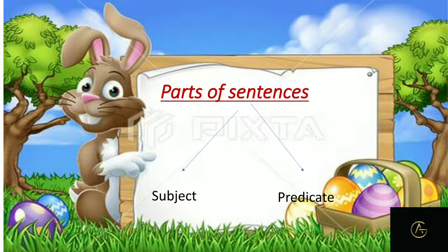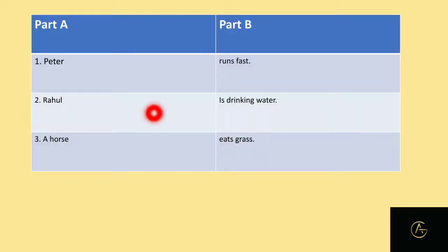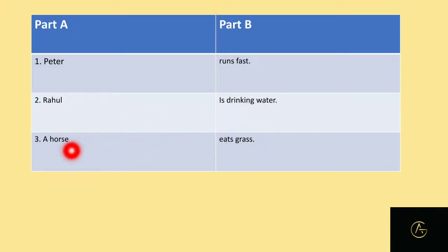Next, let's study the parts of a sentence. There are two parts: subject and predicate. Let's look at a table. The sentences are: 'Peter runs fast,' 'Rahul is drinking water,' and 'A horse eats grass.' Each sentence is divided into two parts — part one and part two — because one part is the subject and the other is the predicate.